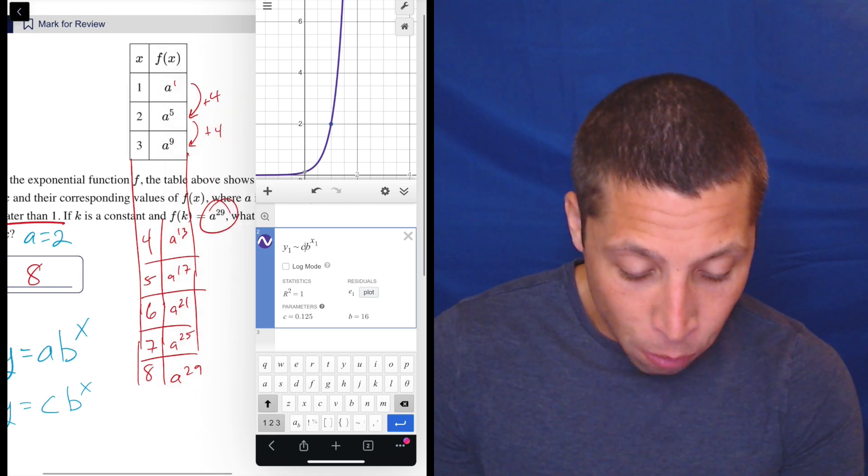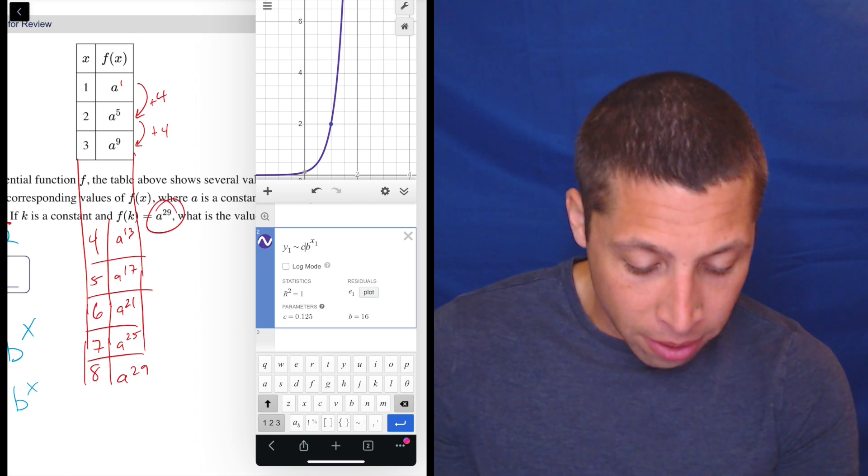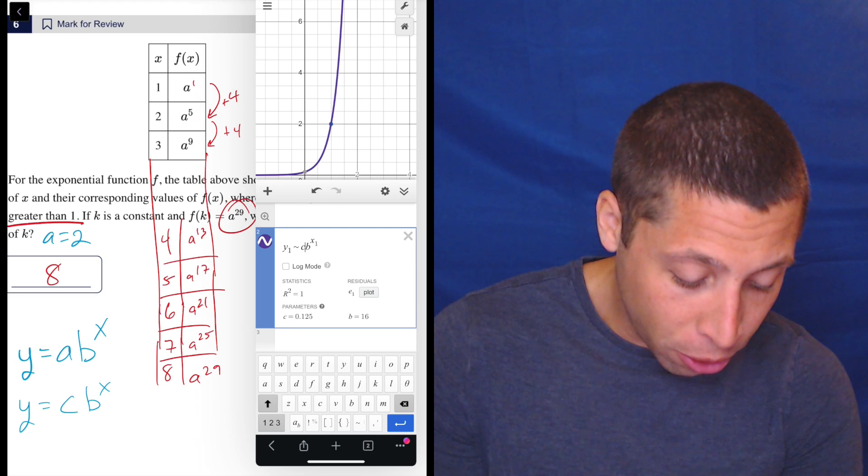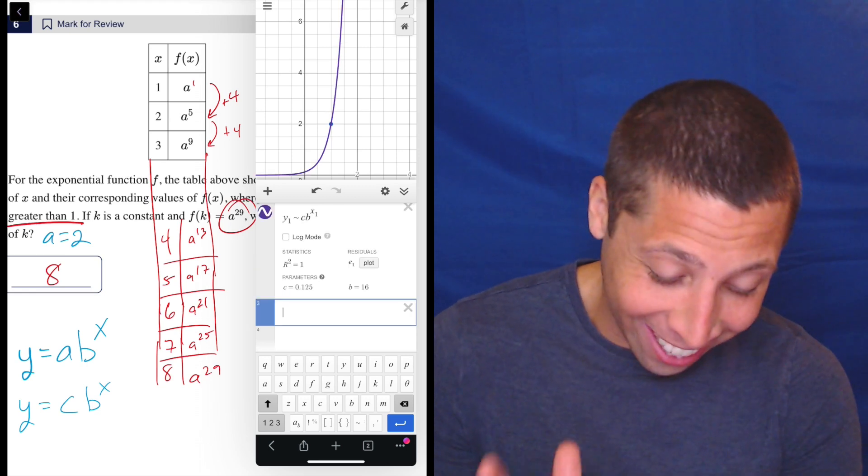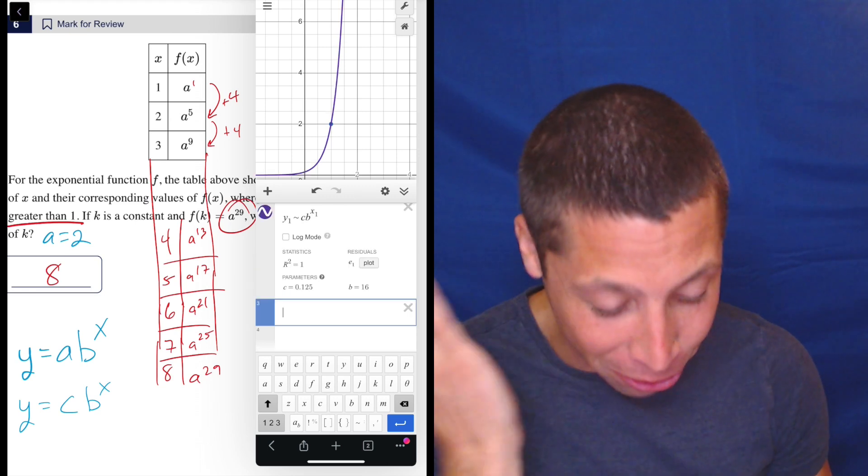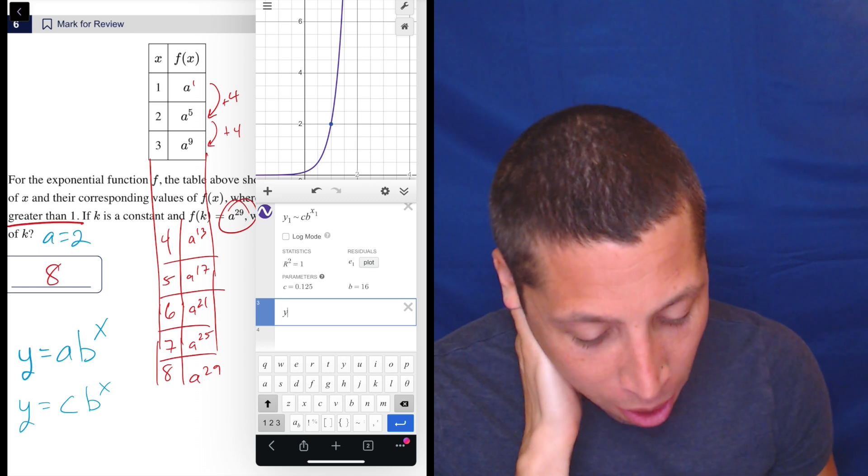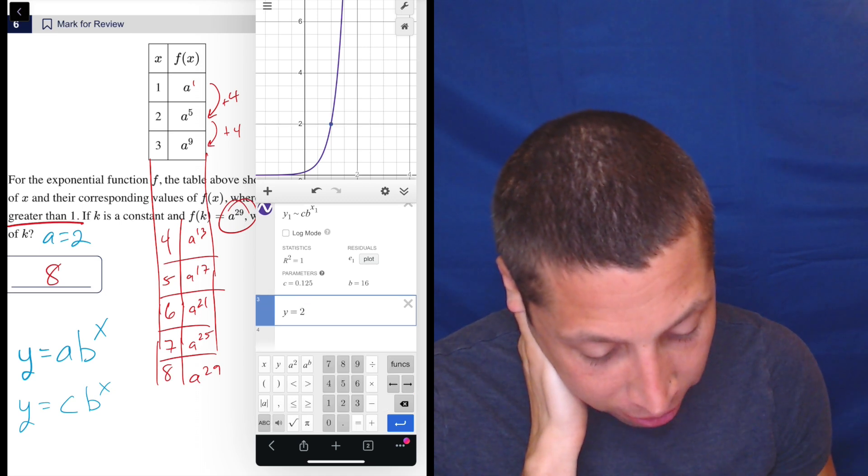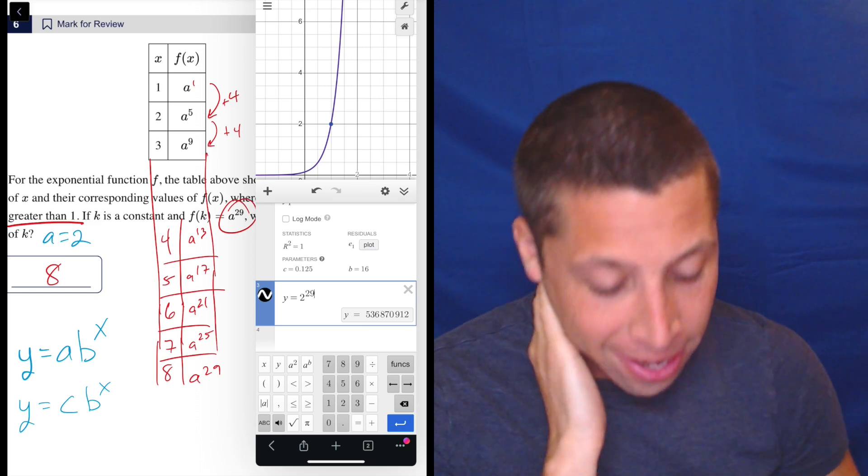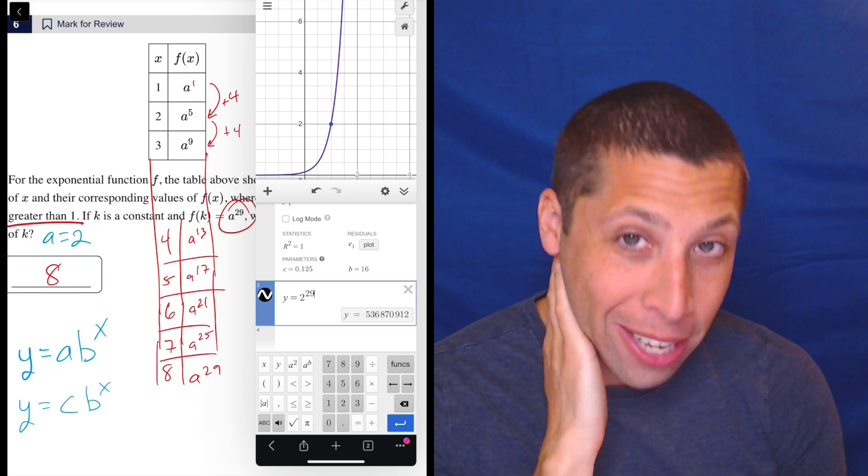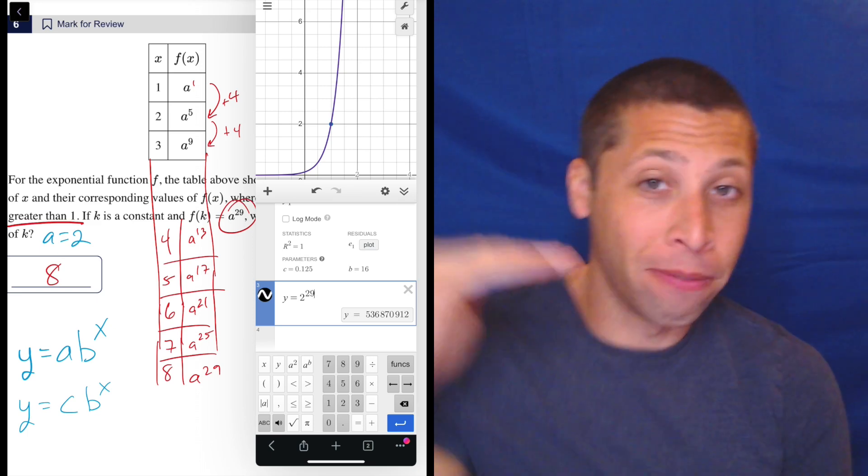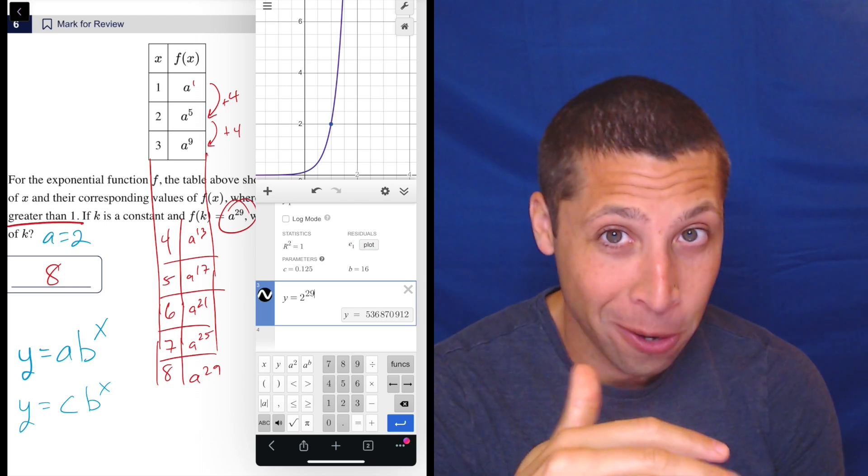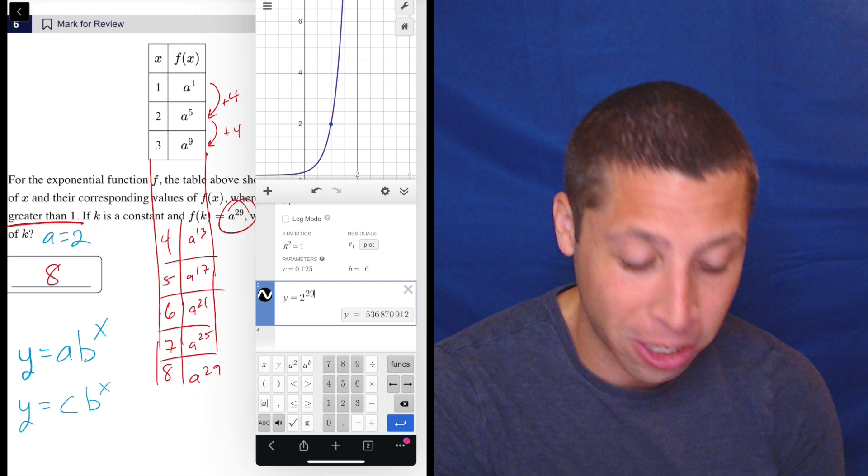So this is our equation, CB to the X. And what do we want? We want to know a number that gives us A to the 29th, or in other words, 2 to the 29th. So what we could do is, again, this is messy. I don't recommend this, but it's better than nothing if you're totally confused, is we can figure out Y equals 2 to the 29th. And it's a big, crazy number.